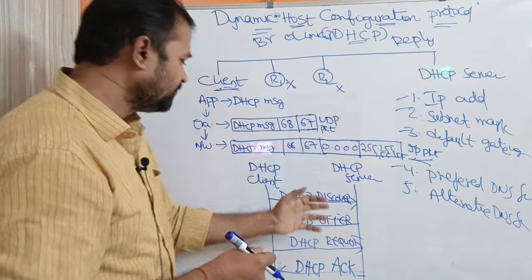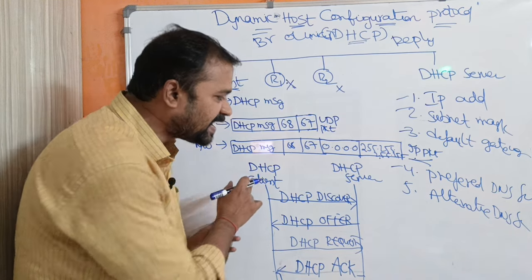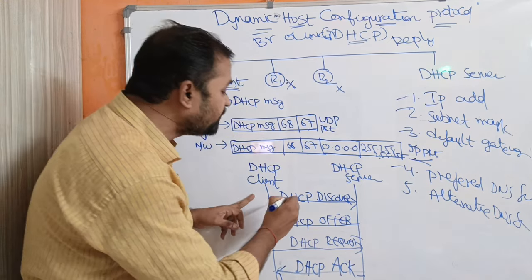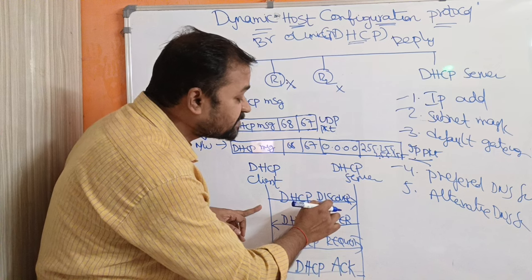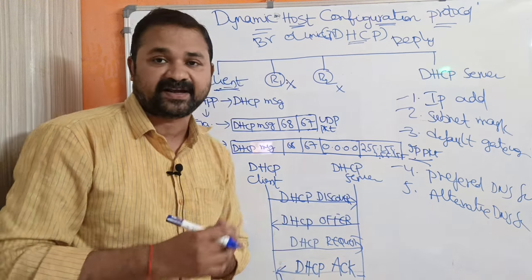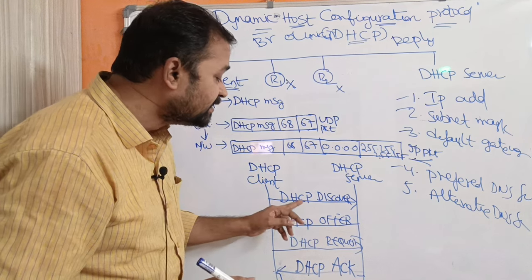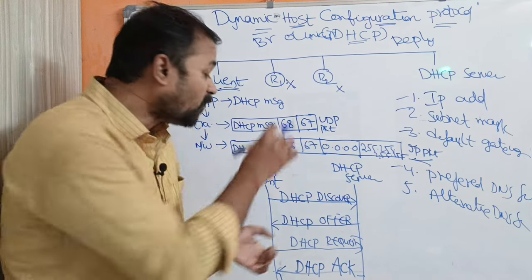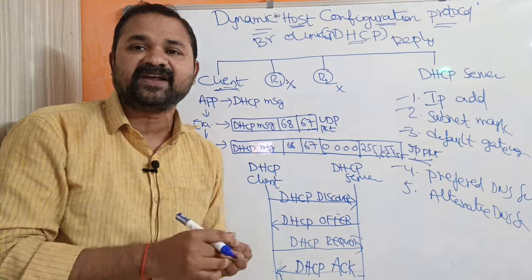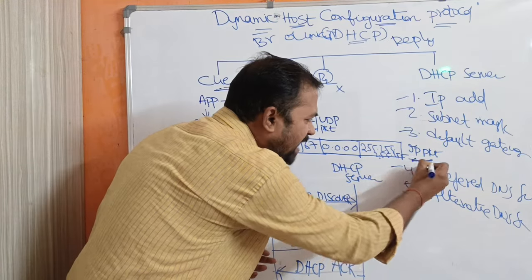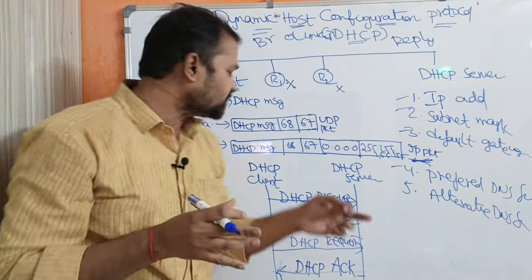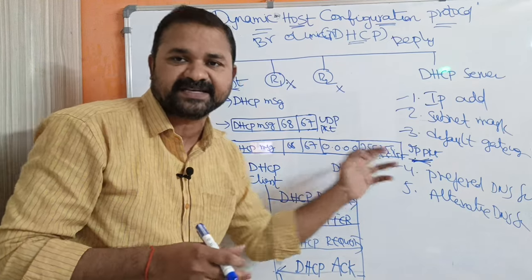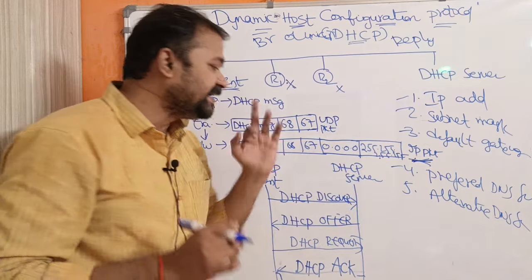Now let's see how that works with the help of a diagram. We have a DHCP client and a DHCP server, and totally four packets are used. First, the DHCP client sends a DHCP Discover packet to the DHCP server. This packet contains the DHCP request message, port numbers, source address 0.0.0.0, and destination 255.255.255.255 — sending all those details to the DHCP server.